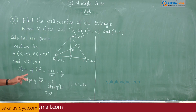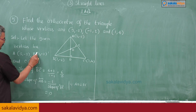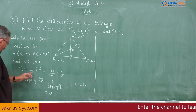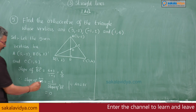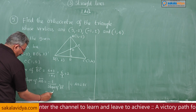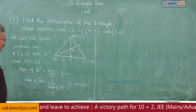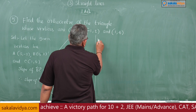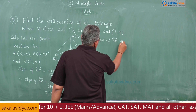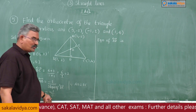Wait — B is (-1, 2), not (1, -2). So slope of BC = (4 - 2)/(1 - (-1)) = 2/2 = 1... correcting: slope of BC = (4 - 2)/(1 + 1) = 6/2 = 3. Therefore, slope of AD = -1/3.